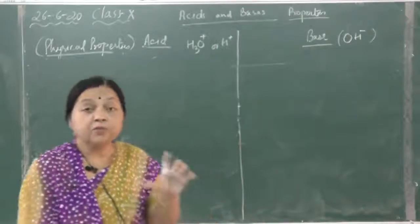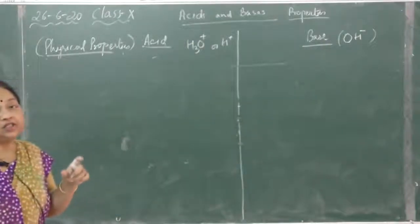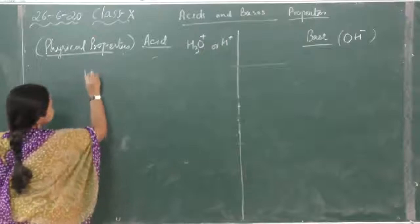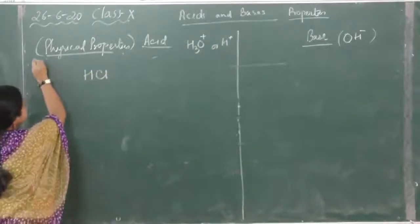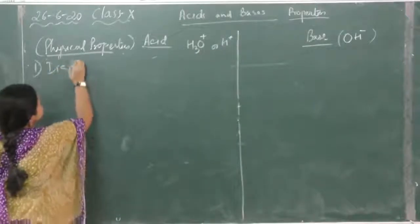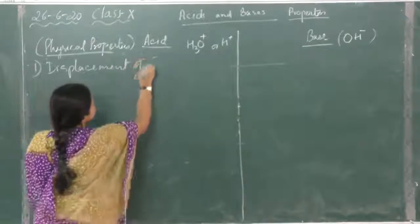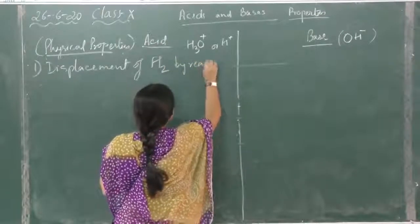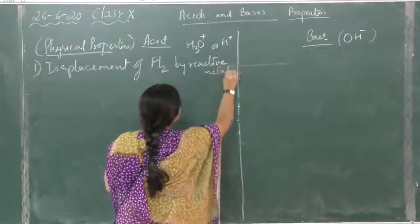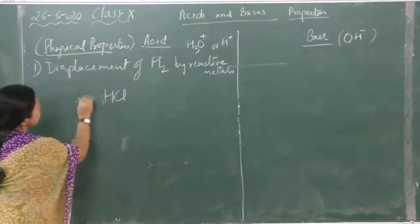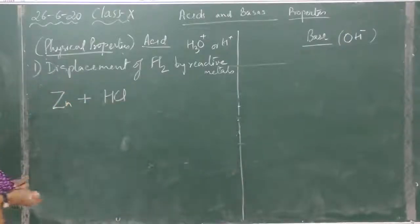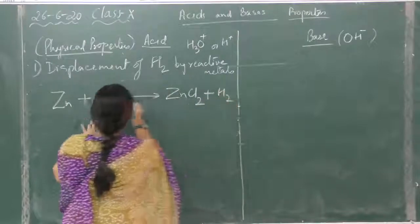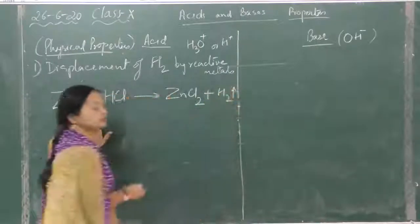But the moderately reactive elements like zinc, magnesium, etc., they will also release hydrogen. First is displacement of hydrogen, displacement of hydrogen by reactive metals. Take an acid HCl and take a moderately reactive metal, that is zinc: Zn plus HCl gives ZnCl2 plus H2. So hydrogen gas is released.